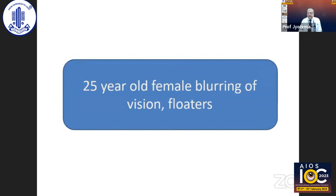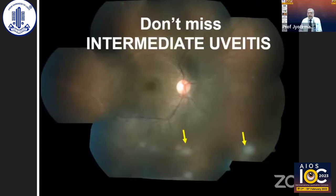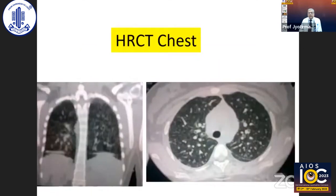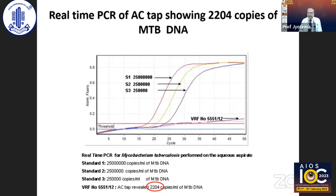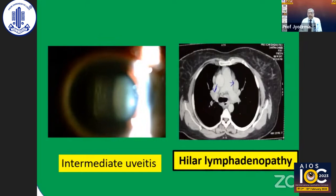This is a 25-year-old female with blurring of vision and floaters. Look for vitreous cells and debris. If you see vitreous cells and debris, look carefully on indirect ophthalmoscopy for exudates in the inferior vitreous and retina — snowbank exudates — this is intermediate uveitis. In our country, rule out TB and sarcoid first: Mantoux, Quantiferon TB-Gold test, serum angiotensin-converting enzyme for sarcoid, and HRCT chest. In this case, mycobacterium tuberculosis infection with parenchymal infiltration of the lung was found on HRCT, and PCR confirmed MTB DNA with 2204 copies. A similar intermediate uveitis case showed hilar lymphadenopathy on HRCT, confirming sarcoid uveitis.